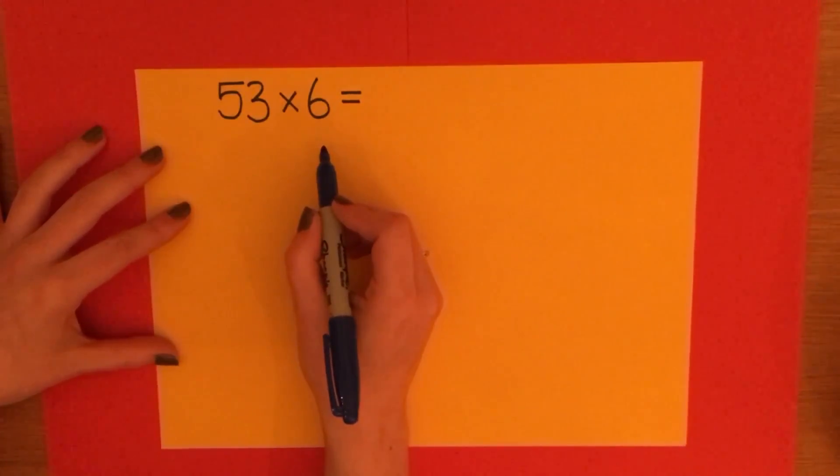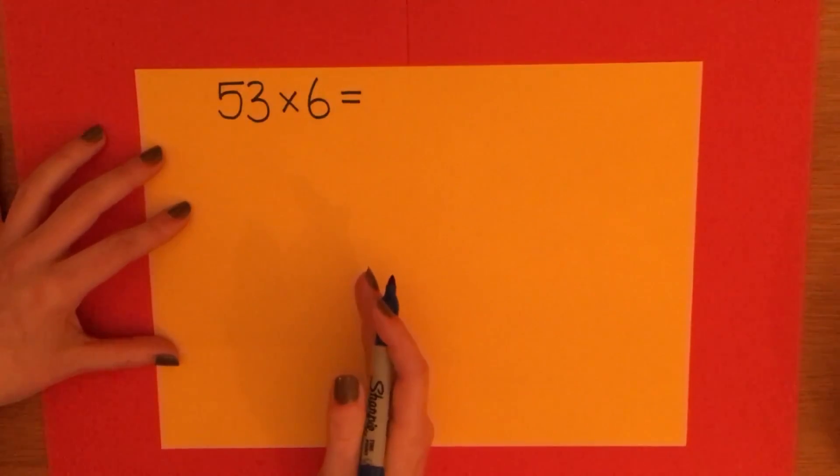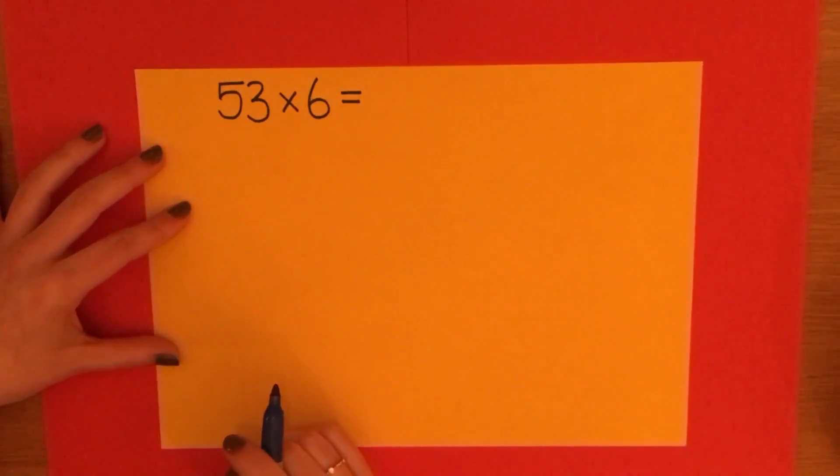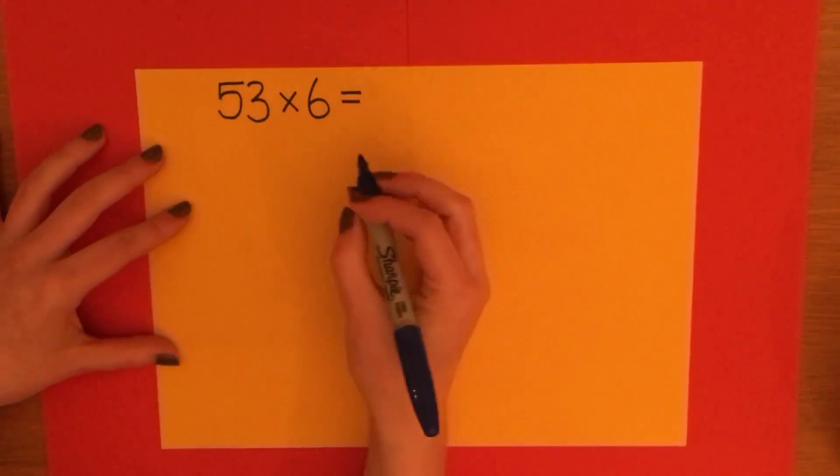So I need to make sure my units are lined up underneath each other and my tens are also lined up next door. So I'm going to start with 53.